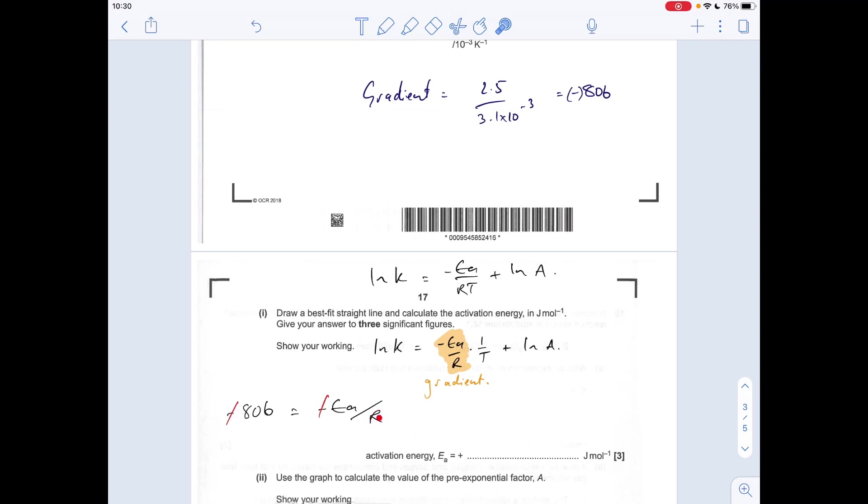So that minus 806 gradient is equal to minus Ea over R. You can see I've just cancelled out the minus sign straight away. So I'm going to take R on the other side, multiply it by that 806. So 806 multiplied by R, which is 8.314, equals our activation energy. And it wants the answer in joules per mole. And they're the units that it will come out in for the Arrhenius equation. And we need to give it to three significant figures. So my calculator value is coming out at 6701.084. So the three significant figures, I would need to write 6700.